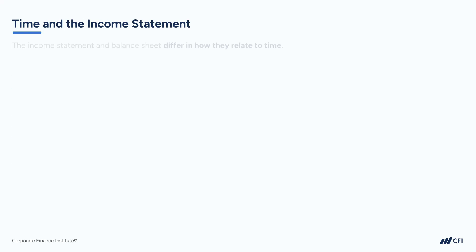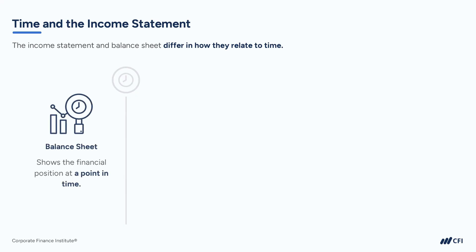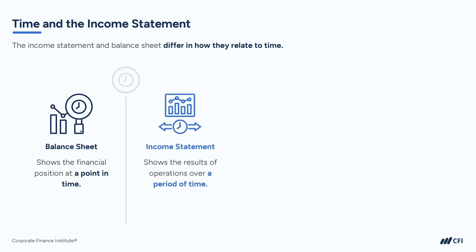There is one thing that makes the income statement very different from the balance sheet, and that relates to time. The balance sheet shows the position of a company at a point in time — you can think of it like a snapshot or photograph on one specific date. The income statement, however, shows the results of operations over a period of time, capturing all of the revenue and expenses that occurred during that specific period.